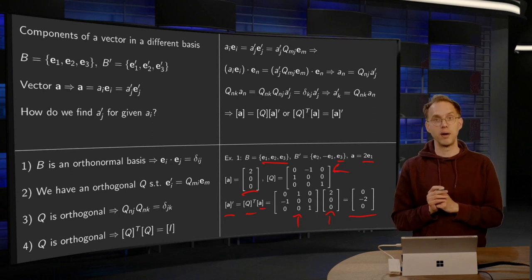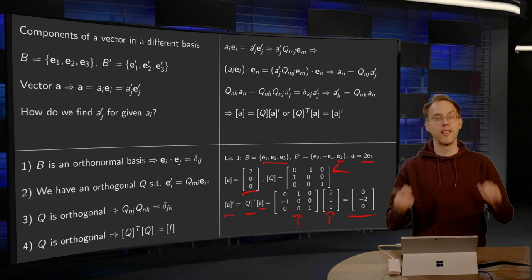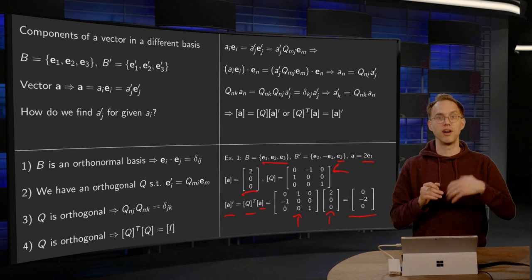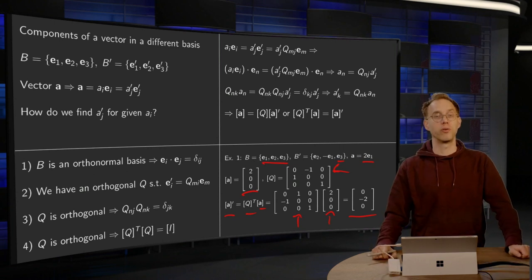So, your A1' is zero, A2' equals minus two, and A3' equals zero. So, that is how you can find your new coordinate vector if you have your Q and your old coordinate vector.